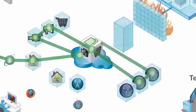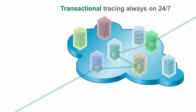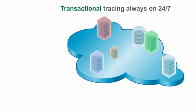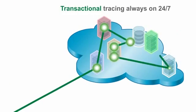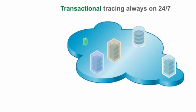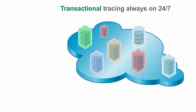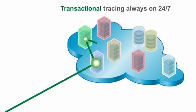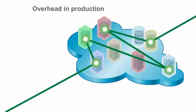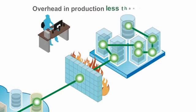PurePath transactional tracing is always on, 24/7. That's both magical and necessary to keep up with dynamic execution paths in cloud and virtualized environments. Overhead in production? Less than 2%.